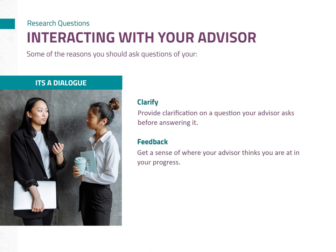Second, get a sense of where your advisor thinks you are at in your progress. It will be your doctoral advisor that decides how you are progressing and when you are ready to move on to the next step. Checking in with them on a regular basis can help them gauge where they think you are, and can provide clarity to you on what you are doing well and where any gaps may exist. Third, acquire information on a topic or get advice on next steps. When you get stuck or don't know how to do something, bring that up to your advisor and ask for their help. Explain what you have done, what you have been able to find out, and what you need from them.